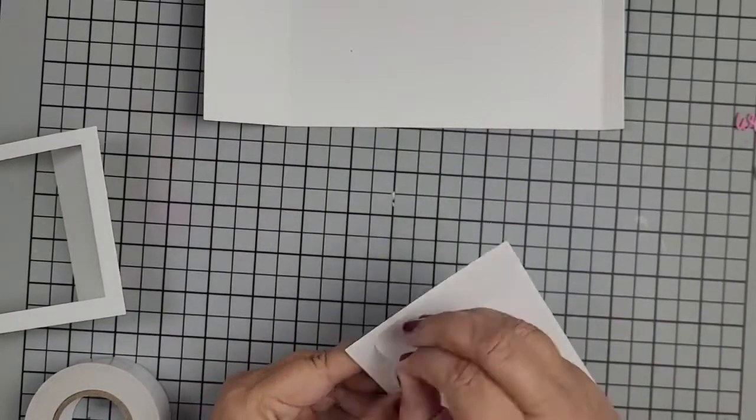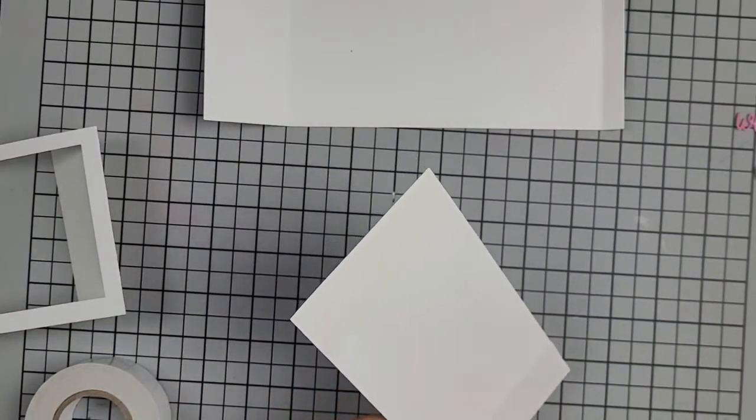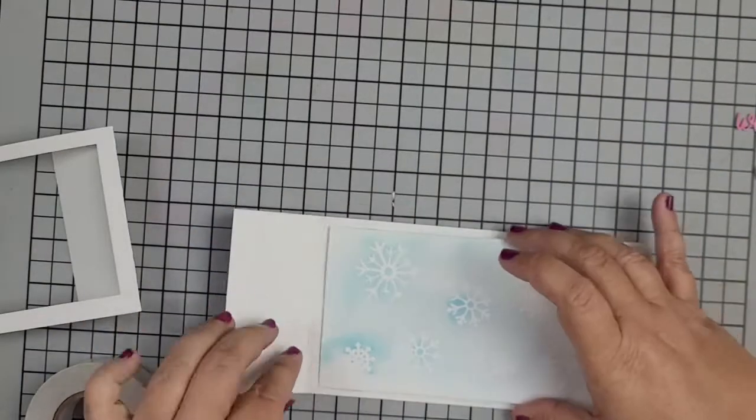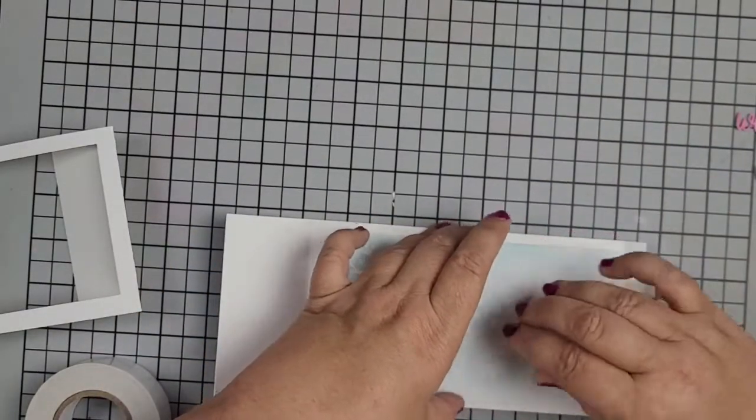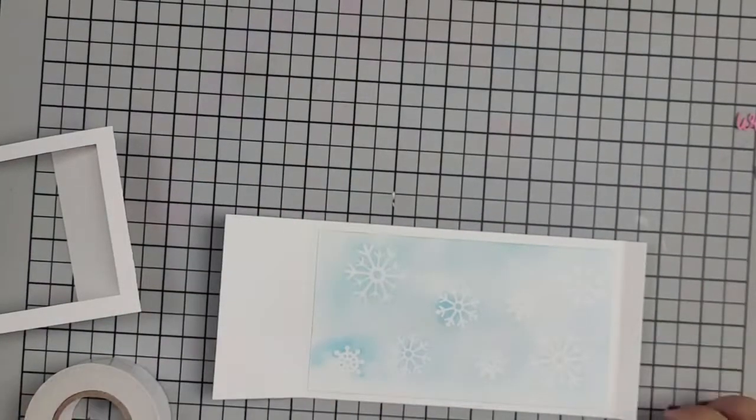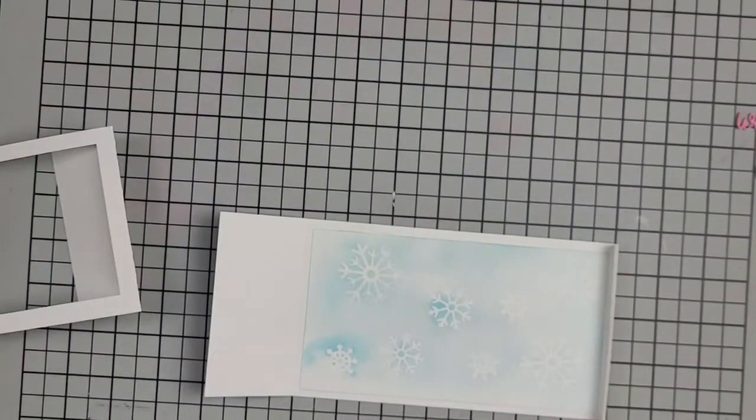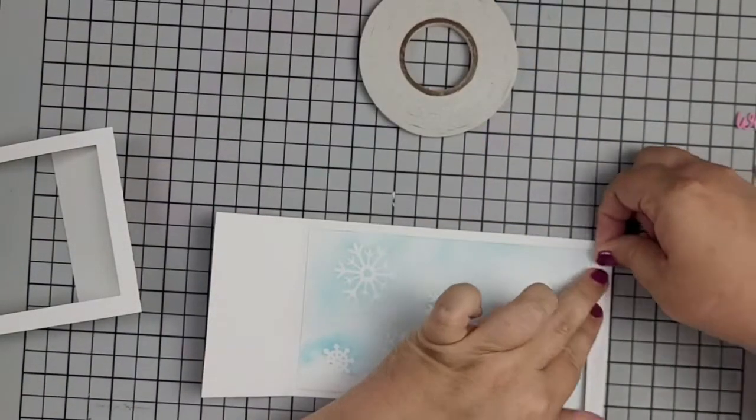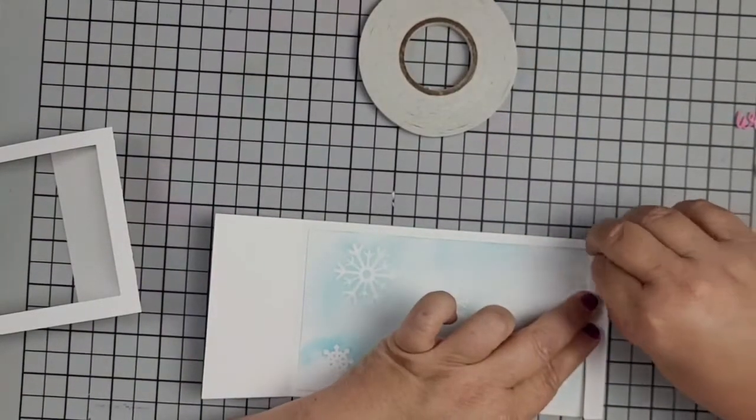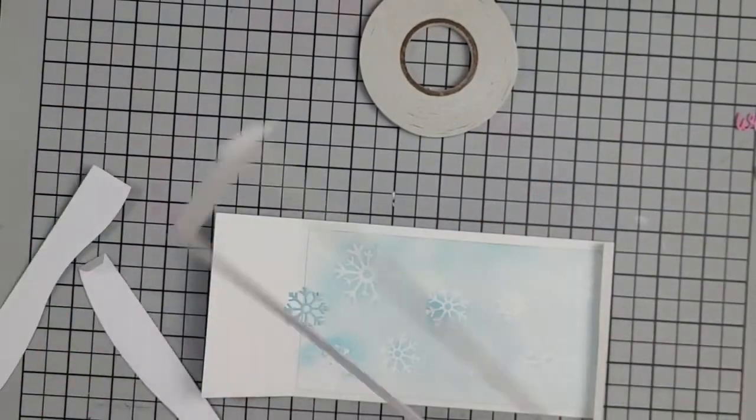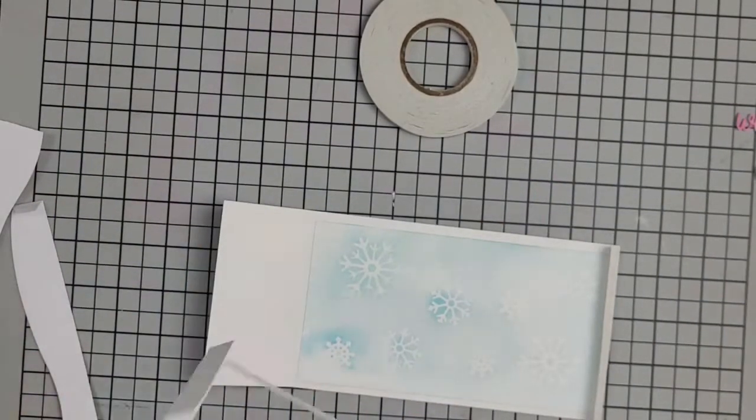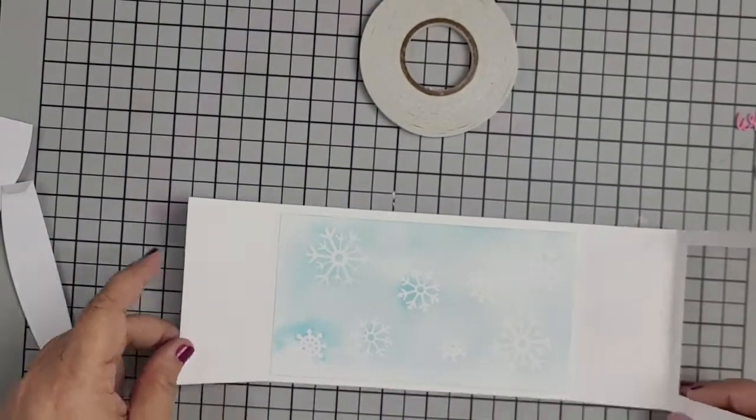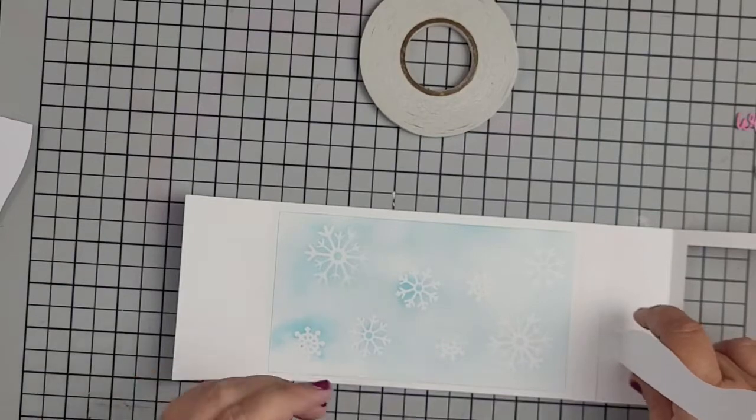So I am putting this shadow box together and it is so easy to put together. So the back panel that I did with the snowflakes is just going on the back of the shadow box. Now I am using double side tape to adhere everything together. And so there we go. You take the big side of the shadow box and attach it to the little side.